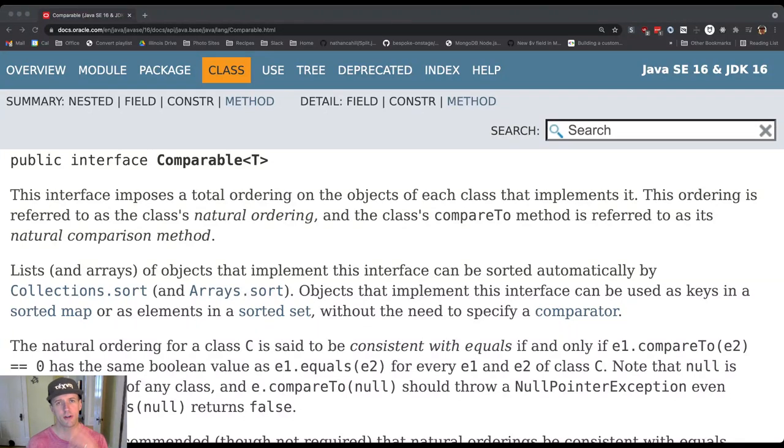As we continue our discussion of interfaces, I want to return to some documentation. I know we're looking at Java documentation, but the comparable interface is really something that Kotlin inherits from Java. So we're going to read this interface a couple of different ways and get a sense of what's going on here.